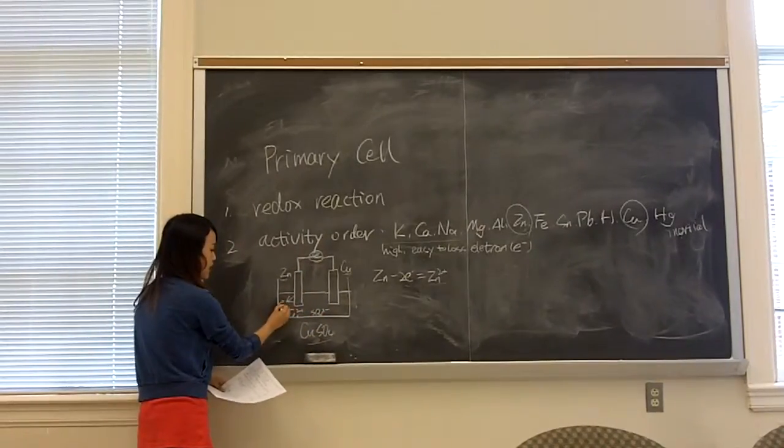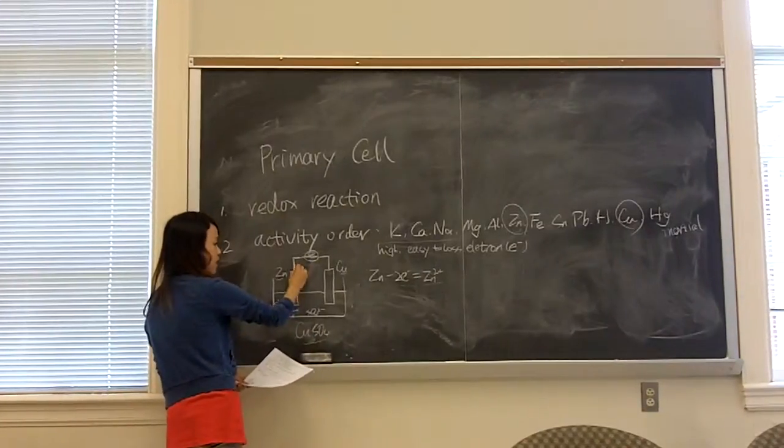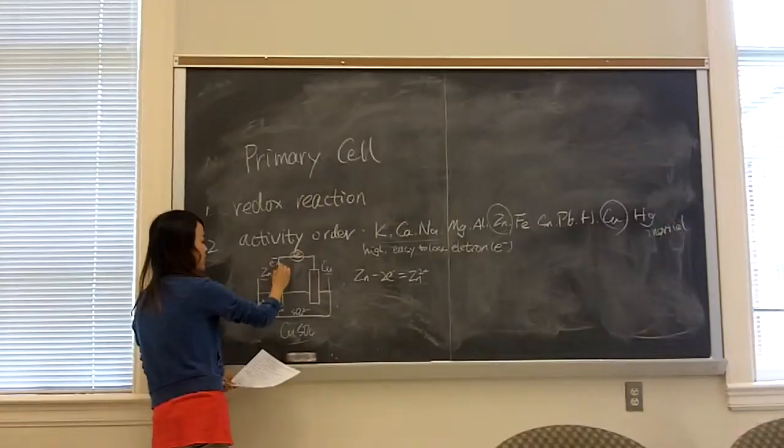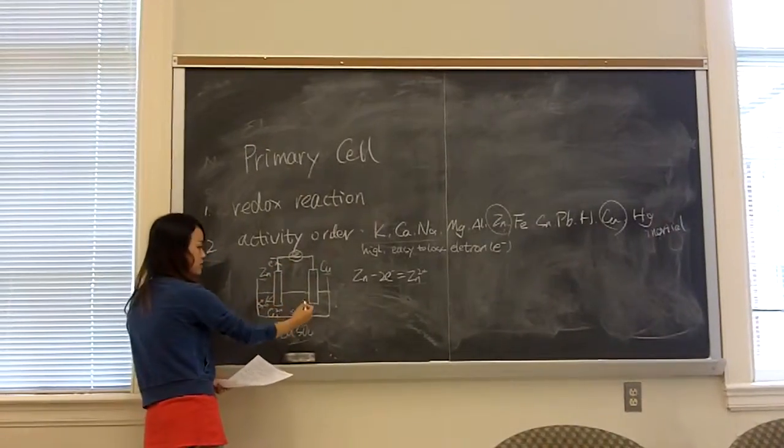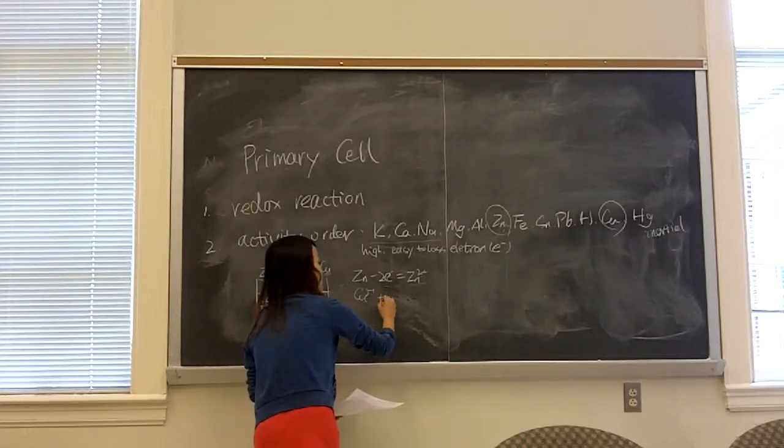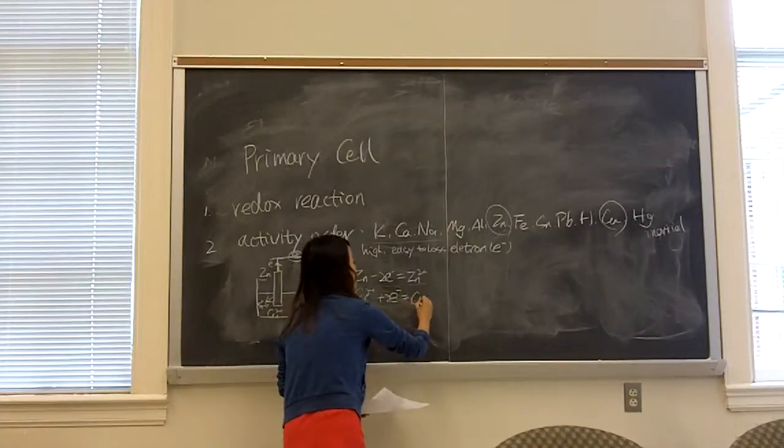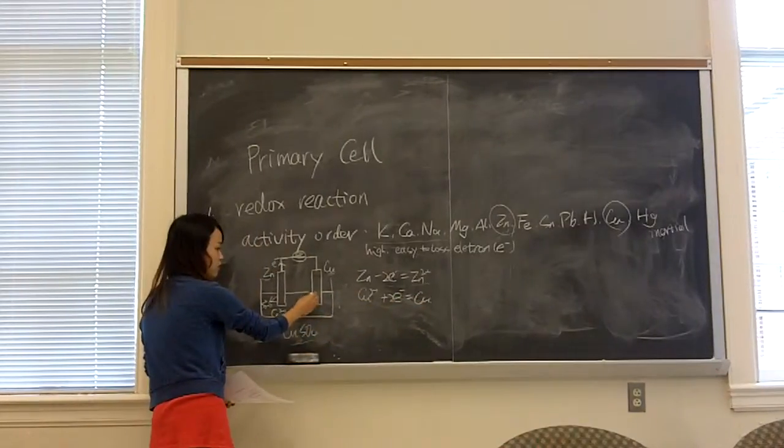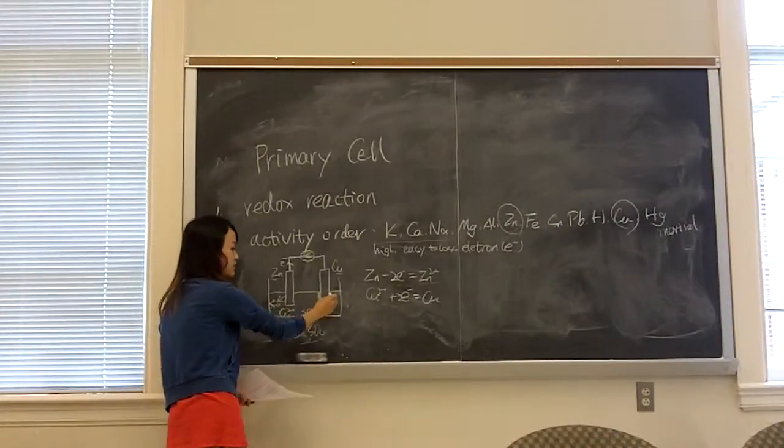And the copper ion in the solution here would get the electron to become copper. It will form a new layer of copper in the surface.